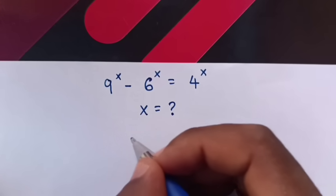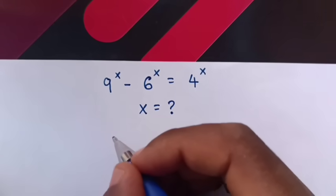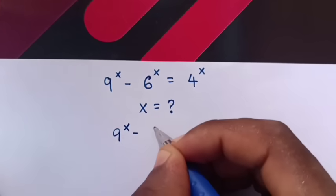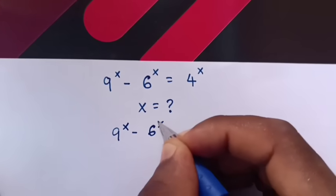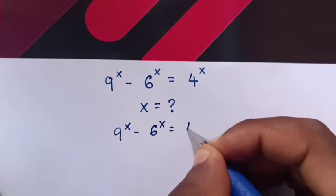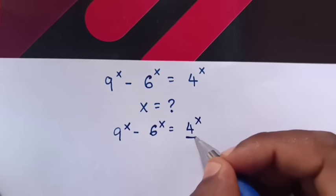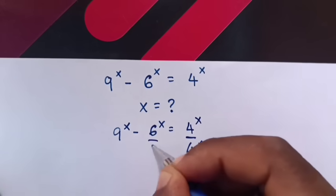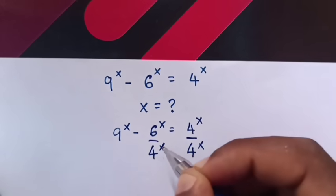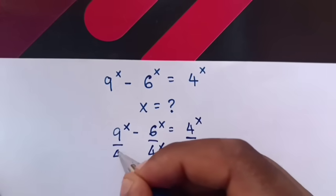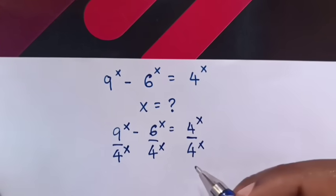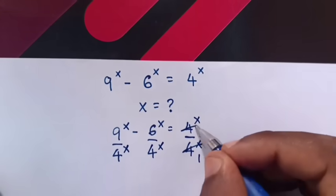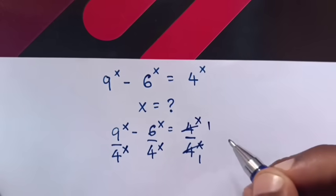First, we divide by 4 power x on both sides. So it will be 9 power x minus 6 power x is equals to 4 power x. Then we divide by 4 power x — 4 power x divided by 4 power x — and this will cancel to 1.